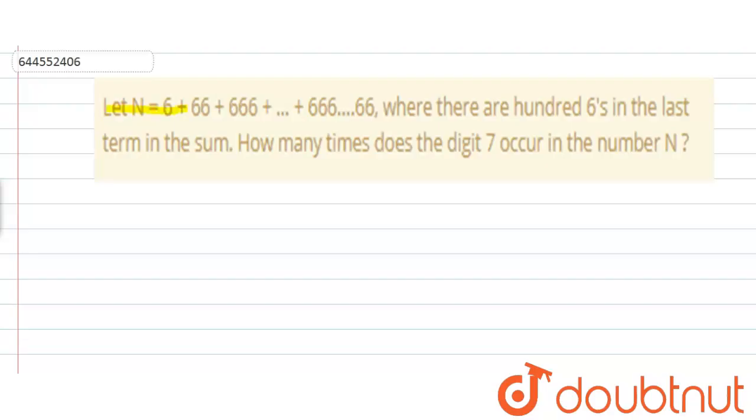The question is: let N = 6 + 66 + 666 + ... + 666...666, where there are hundred 6's in the last term in the sum. How many times does the digit 7 occur in the number N?